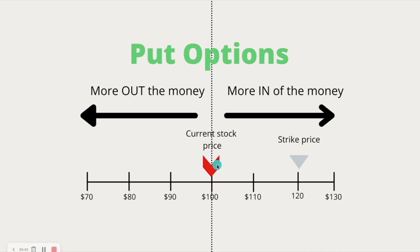So that would be a $20 profit per share — 20 times 100 shares — which would be a profit of $2,000. If that math doesn't make sense to you, I have other videos about the basics here.